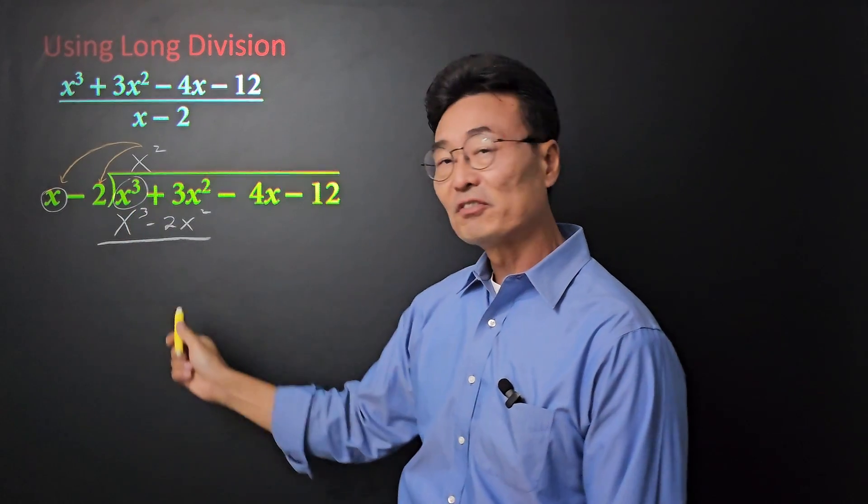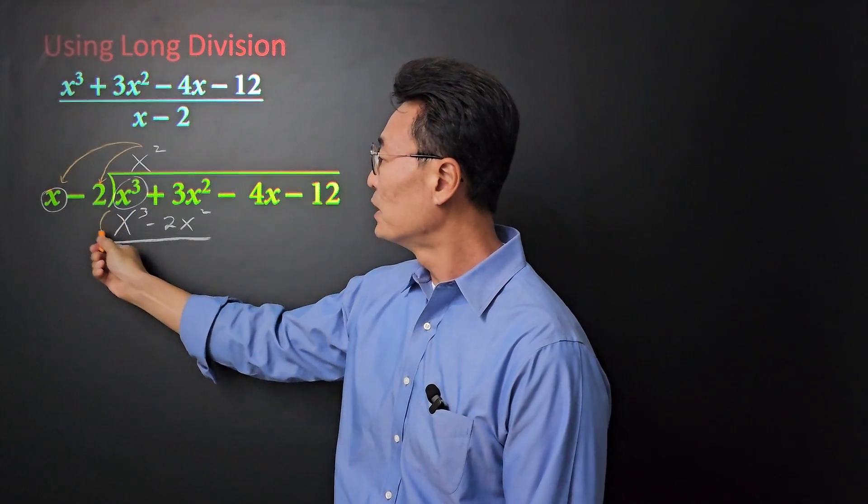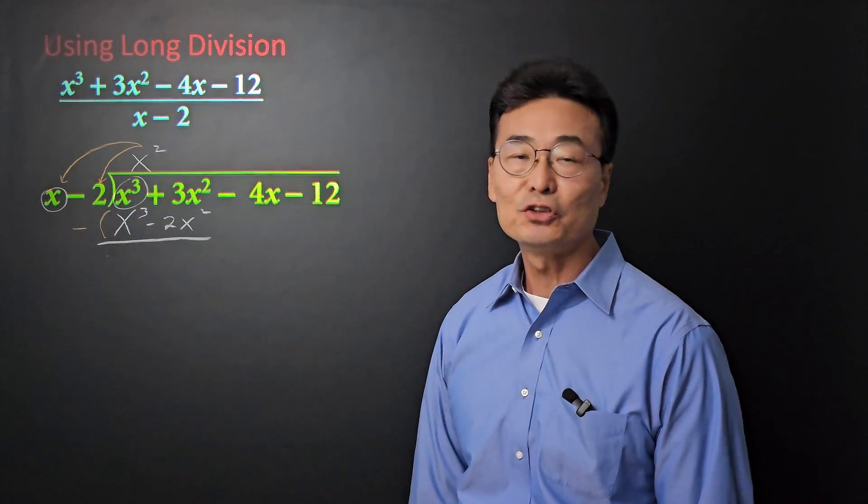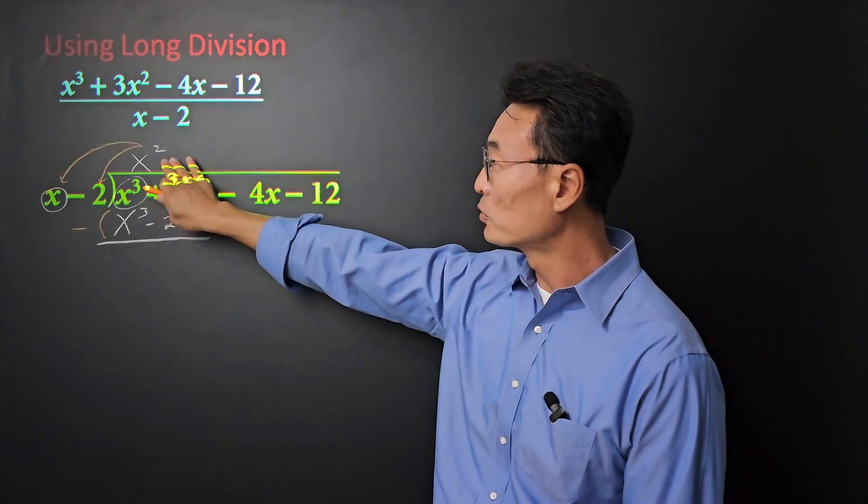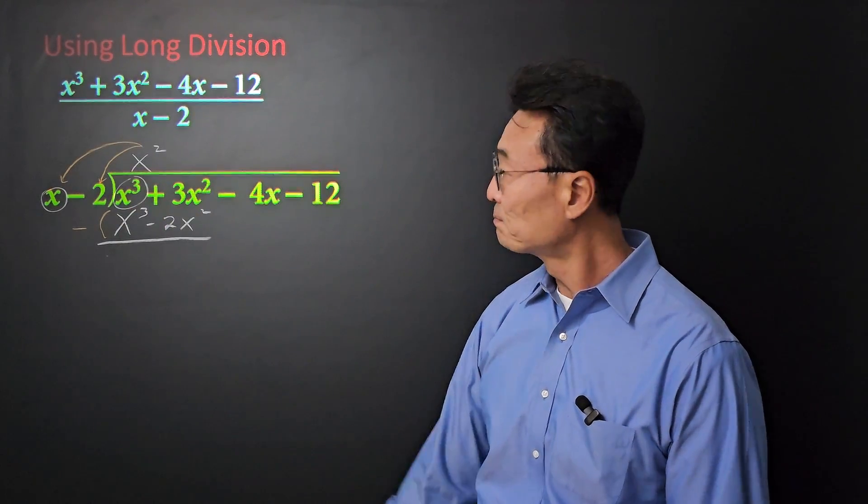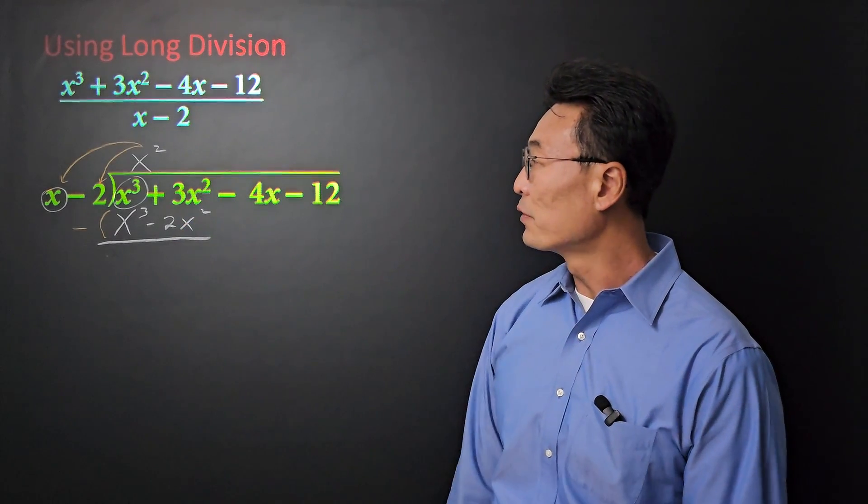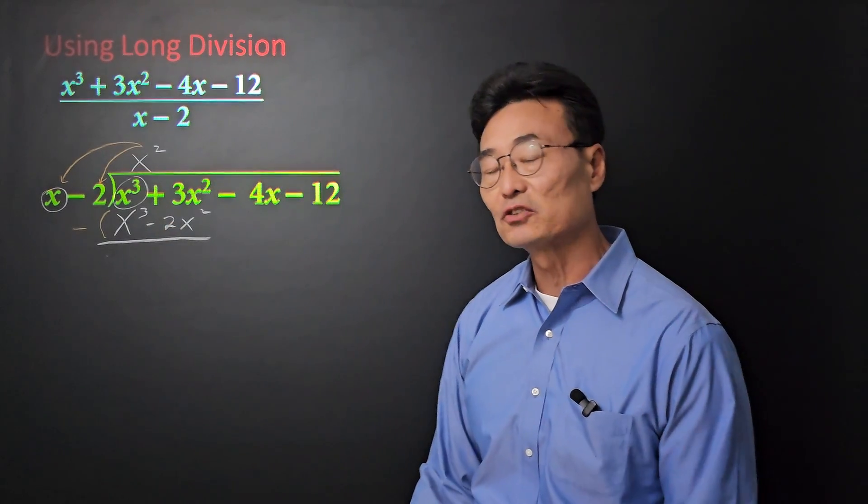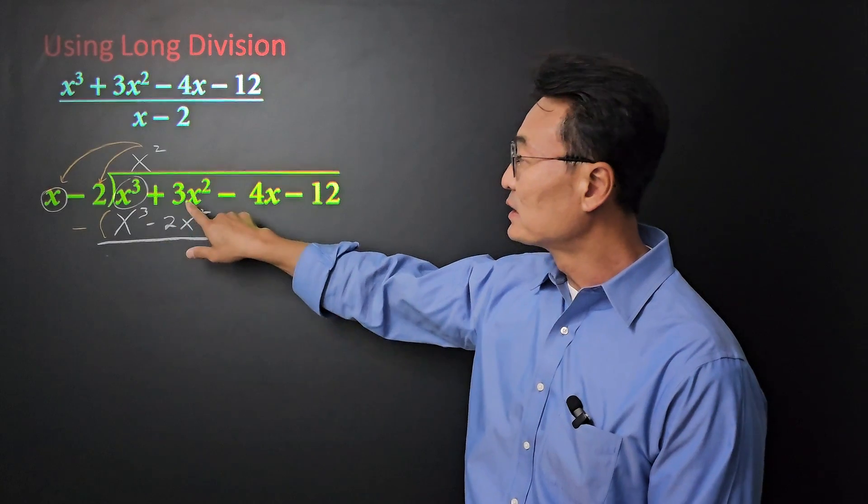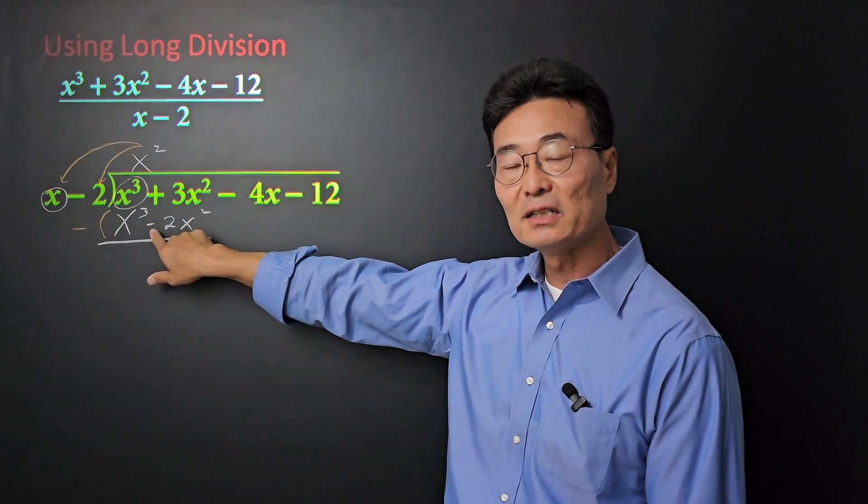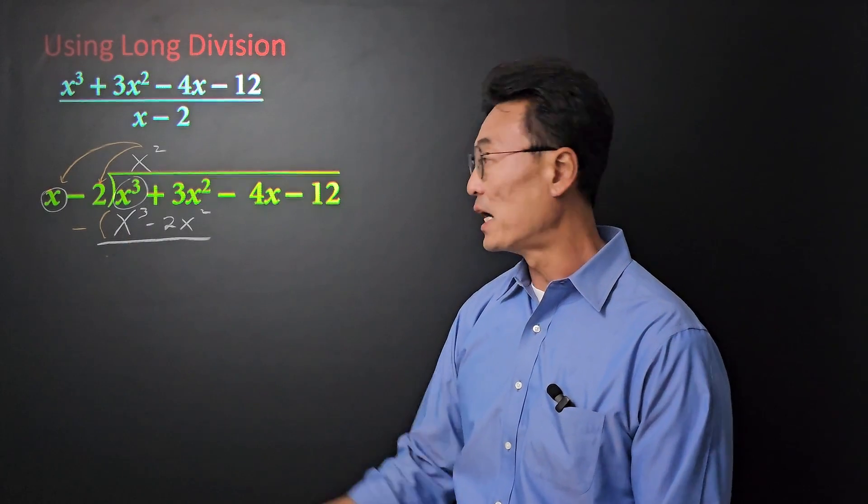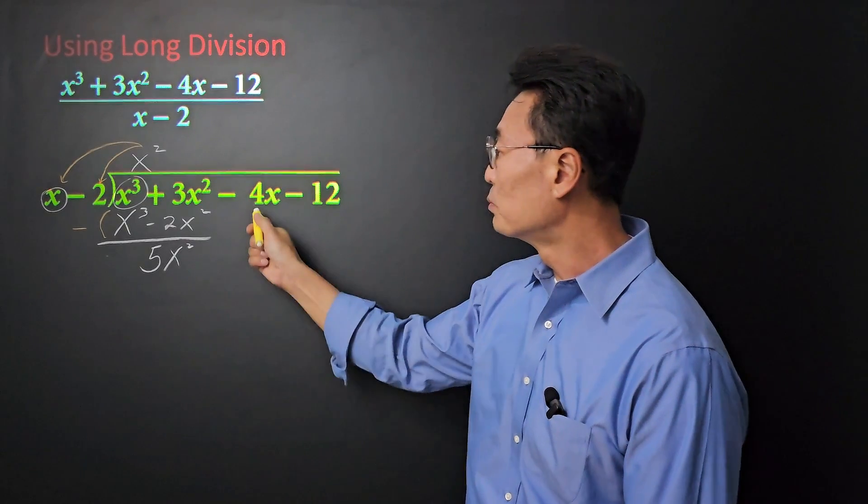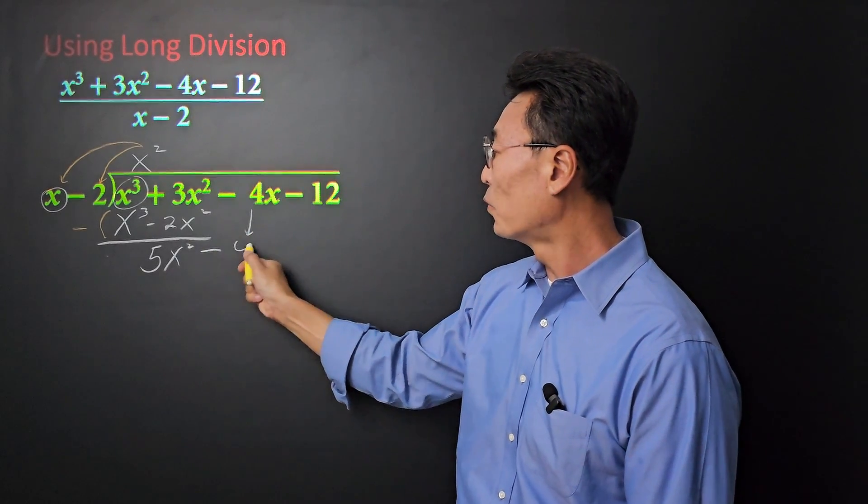Next, we're going to be subtracting. So to show that we're subtracting, I'm going to put a minus sign in the front. If I go x cubed minus x cubed, it's 0. They cancel out. That's why we multiply by x squared in the first place. Next, if we do 3x squared minus a negative 2x squared, it's going to be positive 3 minus a negative 2, which will give us positive 5x squared.